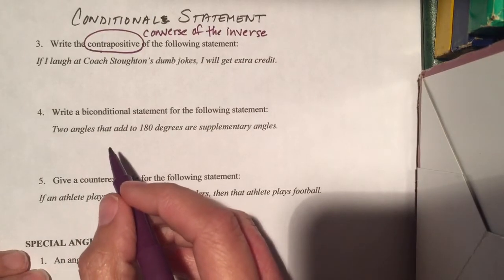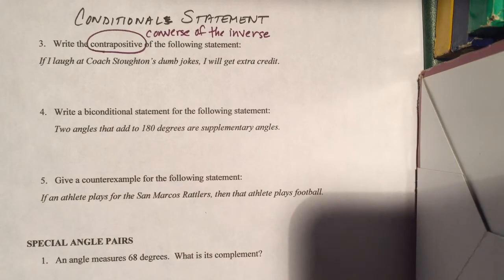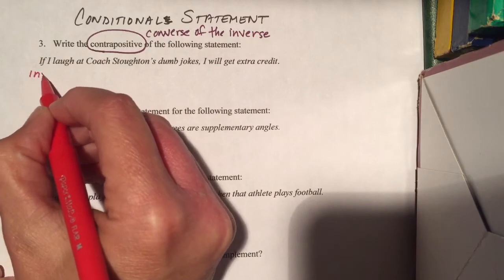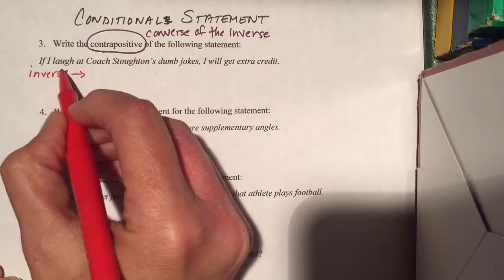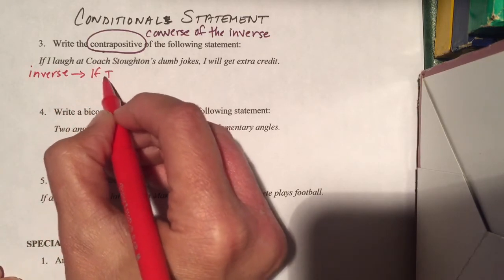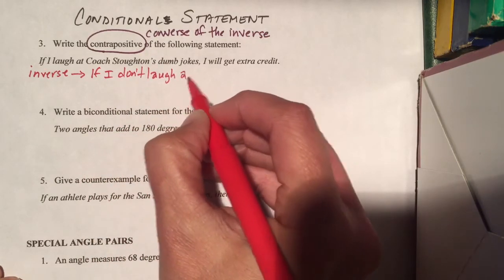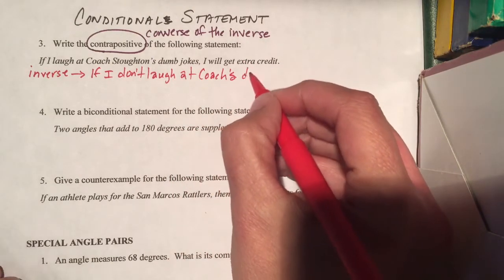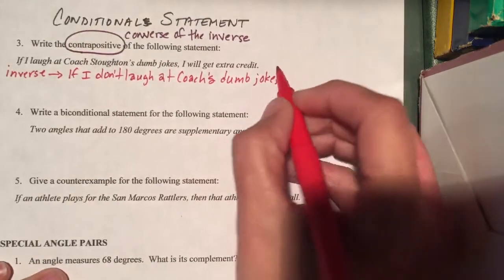In this video I'm going to write it in two steps. You don't have to if you're good enough to figure it out, but I want everybody to have an equal opportunity. So I'm going to go step by step — I'm going to find the inverse first. The inverse would be, remember you make everything negative: if I don't laugh at Coach's dumb jokes, I won't get extra credit.